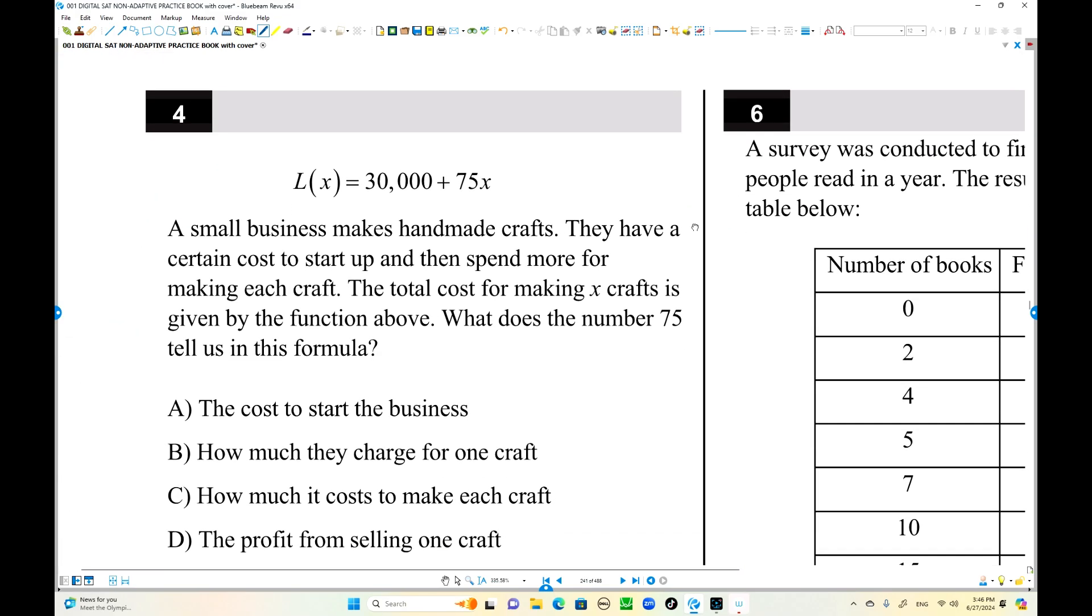Here is number four. L(x) equals 30,000 plus 75x. So first we can figure out what is L. The L is total cost. Combined by two different costs. Startup first. This is startup, build by store or any other way facilities. That's 30,000 dollars fixed.